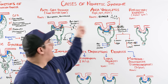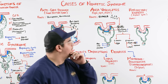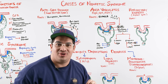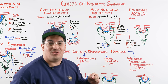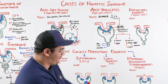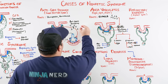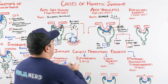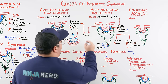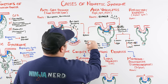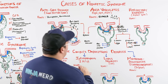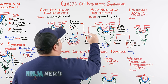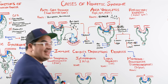Both anti-GBM disease and ANCA vasculitis have the potential to cause lots of inflammatory mediators, leading to rapidly progressive glomerulonephritis. Both can lead to an early development of renal failure due to glomerular crescents. It's important to remember that RPGN can be seen in both anti-GBM disease and ANCA vasculitis, and they have a very high incidence of this presentation.